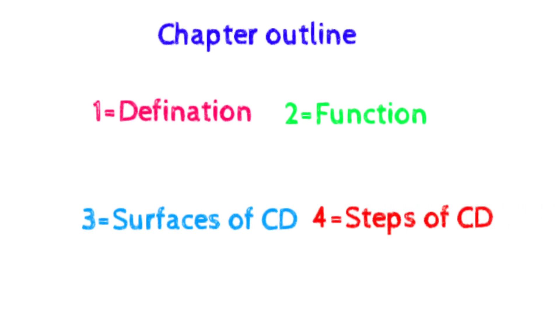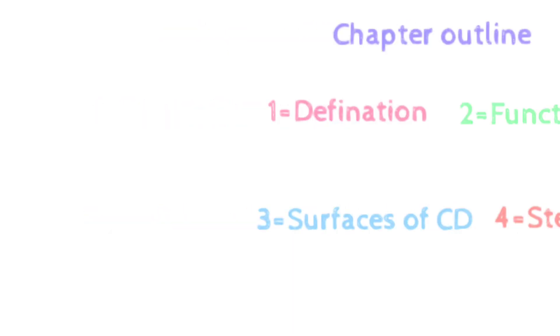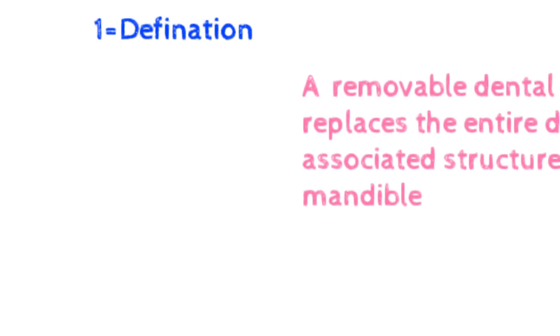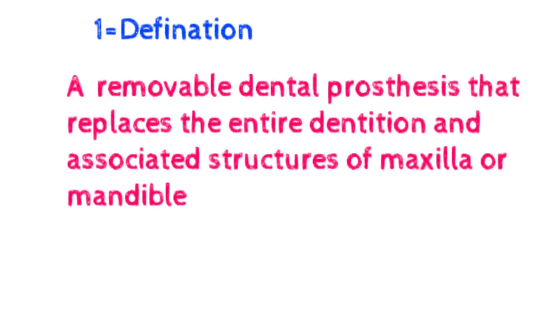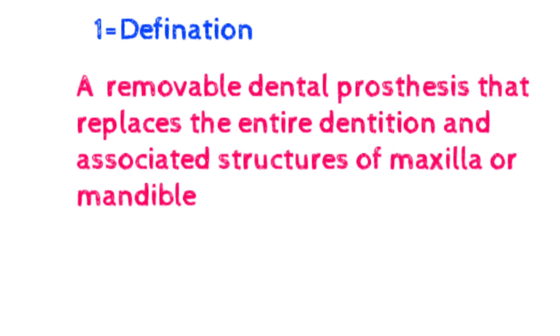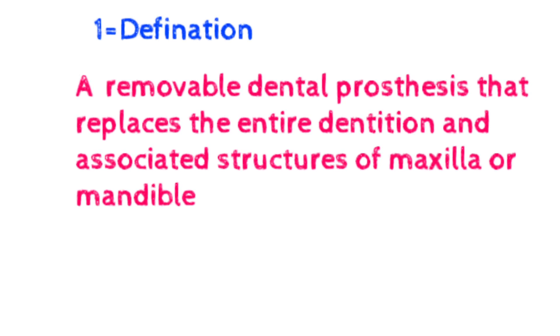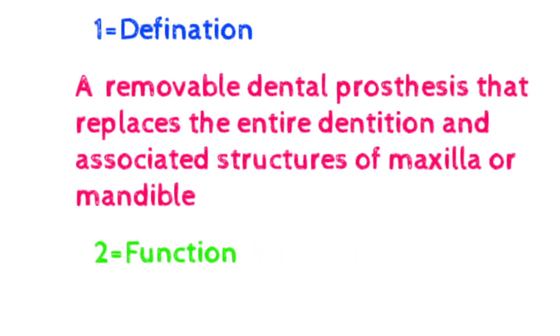Today's chapter outline includes: number one, definition of complete denture; number two, functions of complete denture; number three, surfaces of complete denture; and number four, steps of complete denture fabrication. Starting with the definition: complete dentures are removable dental prostheses that can be removed by the patient, and they replace the entire dentition — meaning all teeth — and associated structures of the maxilla or mandible, such as the gingiva.